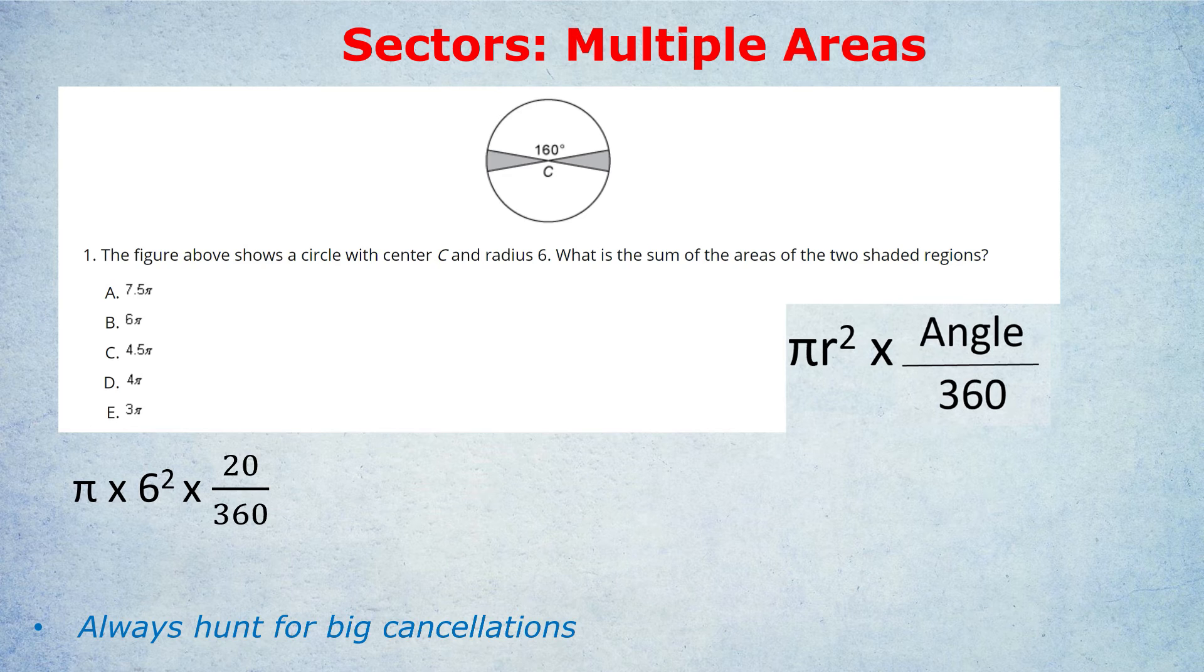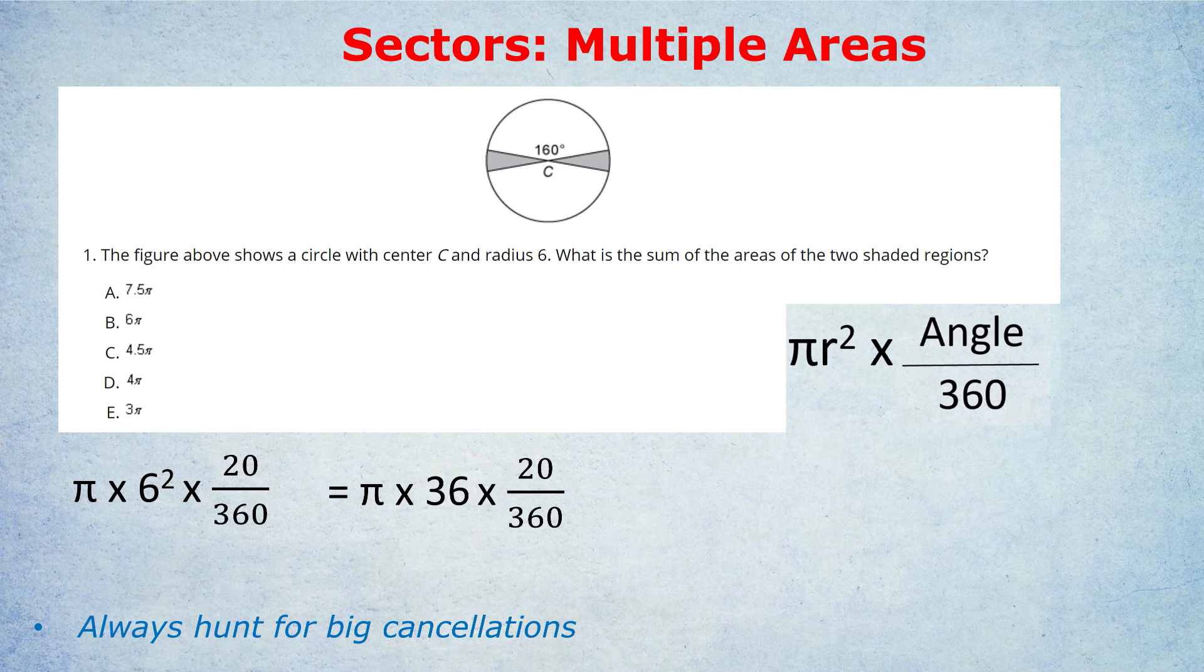As I've said at the bottom, always hunt for big cancellations. Notice something on the left there. 6 squared is 36, and that 36 could cancel out big time with the denominator. Straight away, always be on the watch out for any cancellations you can do. Because 6 squared is 36, that 36 cancels with the 360 just to leave 10 in the denominator. Pi times 20 over 10, 20 over 10 becomes 2, and we get 2π. Of course, that is for only one slice, not both slices, so both slices together would be 4π.